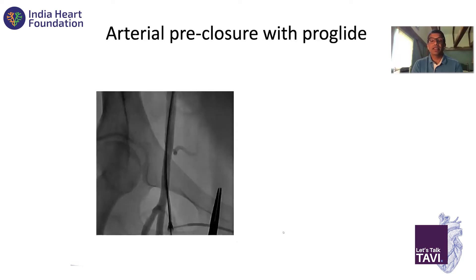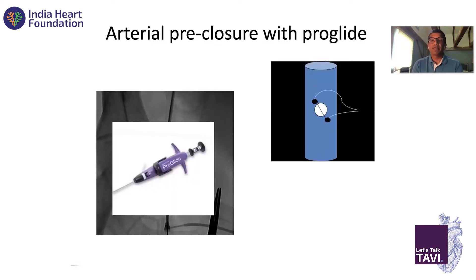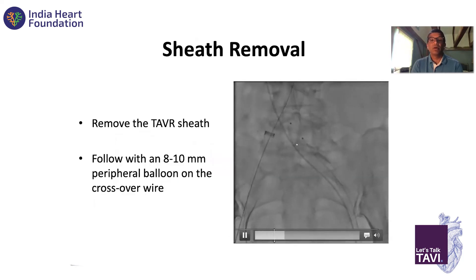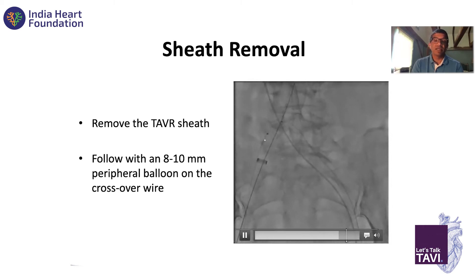Then I do pre-closure — I do two ProGlides typically, placed at the 10 and 2 o'clock position. The idea is to create an X-shaped closure for when the sheath comes out. You deploy the ProGlides, leave the knots out, pre-close but don't tie the knots. Early on, when we were using 22 and 24 French sheaths, we took the sheath out and brought a balloon from the other side over the 014 wire. The advantage is if there's any bleeding, you quickly inflate the balloon to minimize blood loss — we size that balloon to the external iliac.